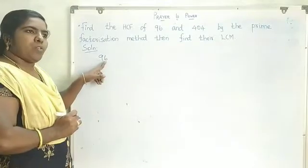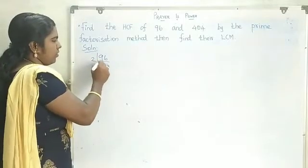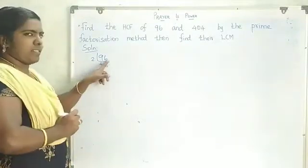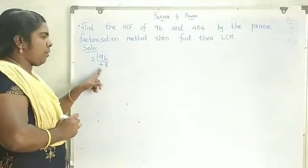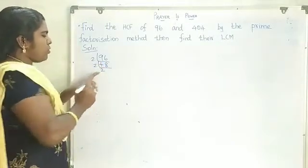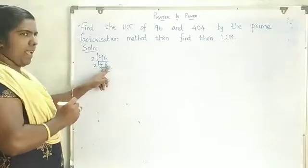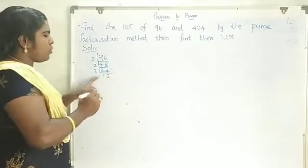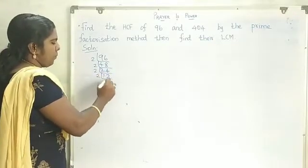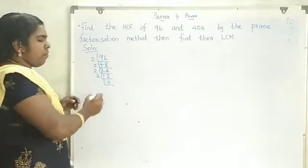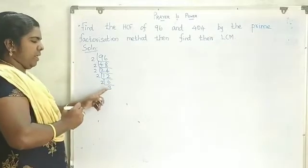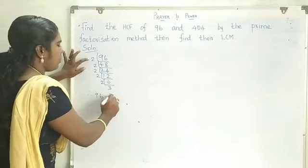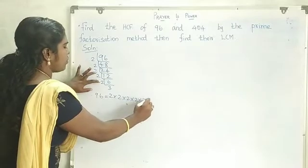96 is an even number, so 96 is divisible by 2. Dividing step by step: 96 ÷ 2 = 48, 48 ÷ 2 = 24, 24 ÷ 2 = 12, 12 ÷ 2 = 6, and 6 is again divisible by 2 giving 3. Since 3 is a prime number, we stop the process. Therefore, 96 = 2 × 2 × 2 × 2 × 2 × 3.